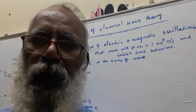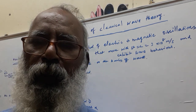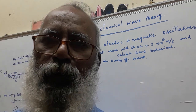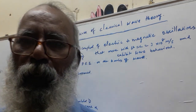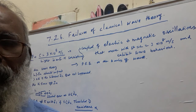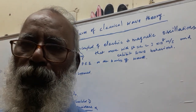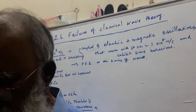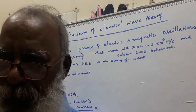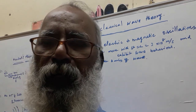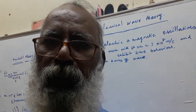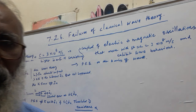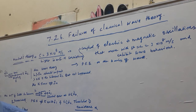Hi friends and new students. In twelfth standard, second volume, unit seven, we are going to see a very important topic. We are going to see why the classical wave theory was failed and not accepted. That's the thing we are going to see today — keenly observe.